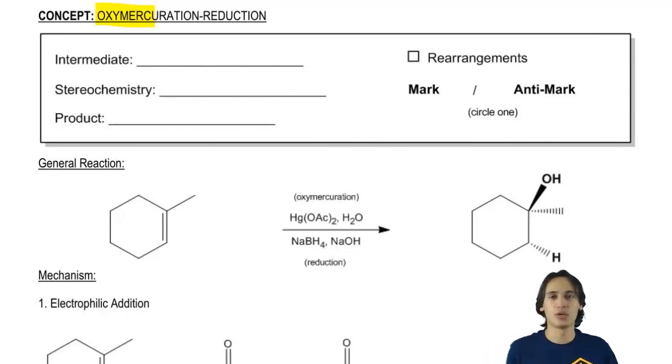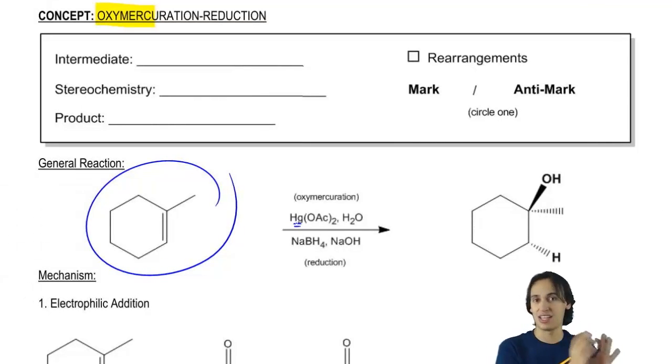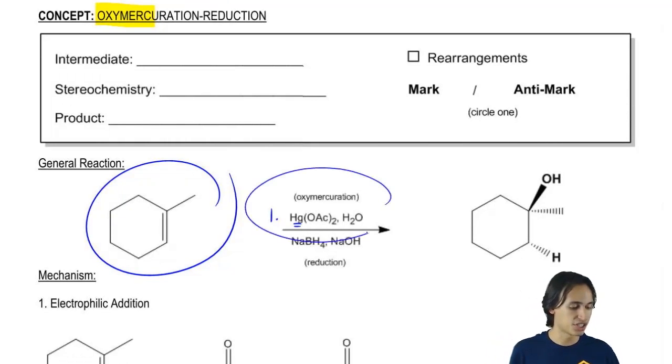So in general, what do we see? What's the general reagents that we use for this? What we're going to find is that you have a double bond, of course, and then we're going to react it with this weird reagent that's a mercury with two acetate or acetyl groups on it. So that's what OAc means, it means acetyl groups and I'll show you what that looks like in a second. So you have that and you have water. So this is really the first step and this is called the oxymercuration step.